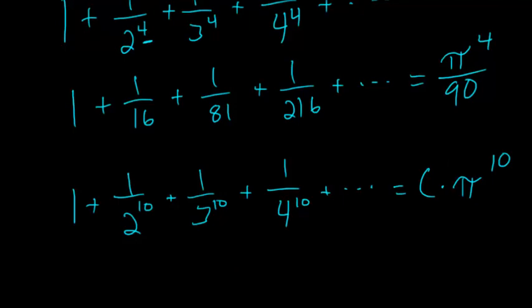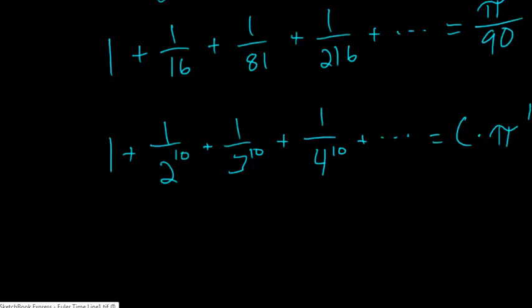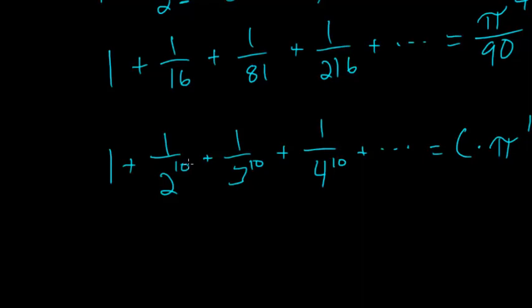So Euler's able to solve all of this, and if we go back to our timeline, I have in 1737 that he publishes the prime product formula. And he actually gets it from what we're working on now. And the reason this prime product formula is so important is that it's the first equation involving all prime numbers.